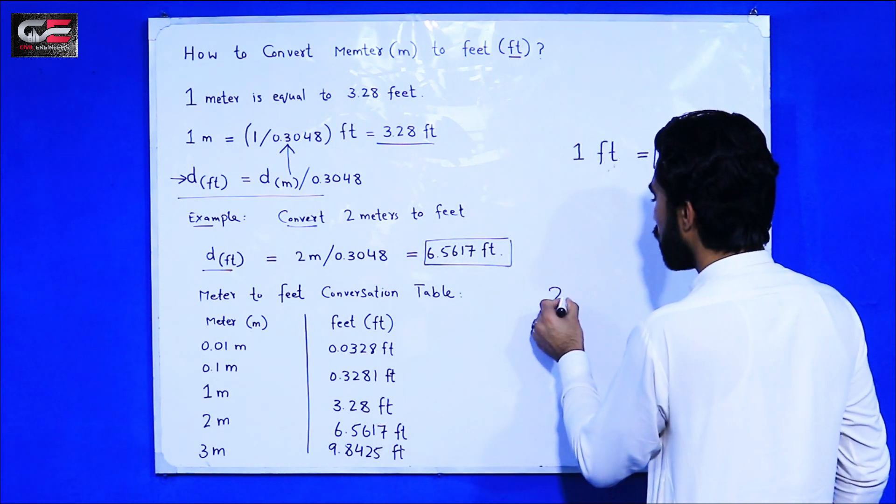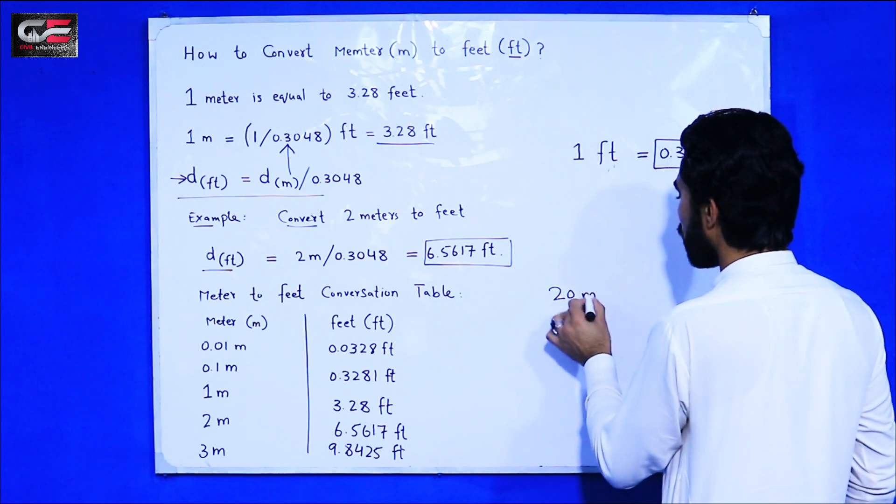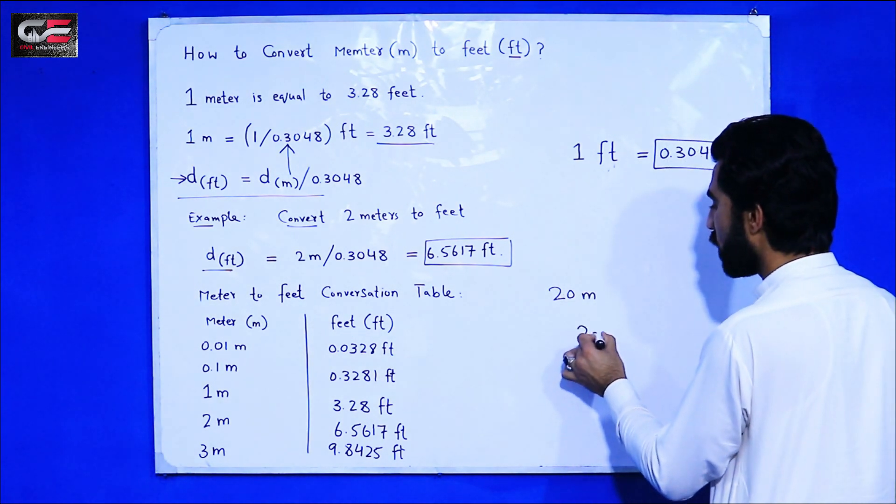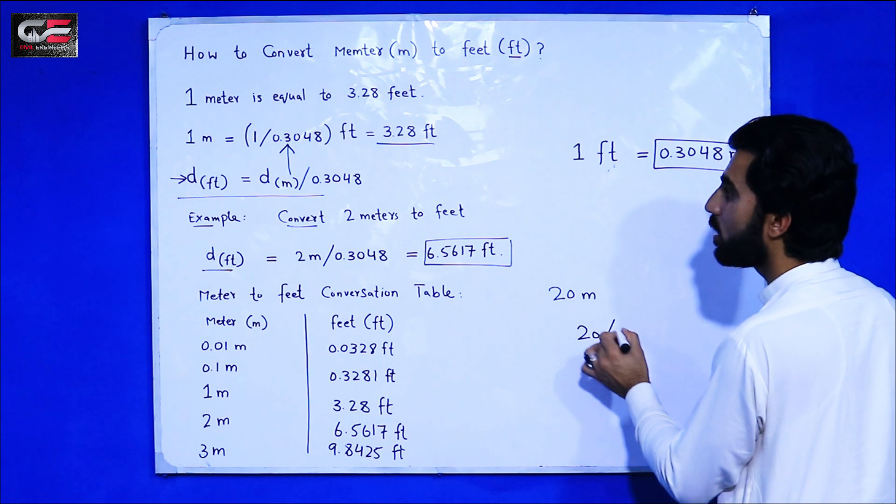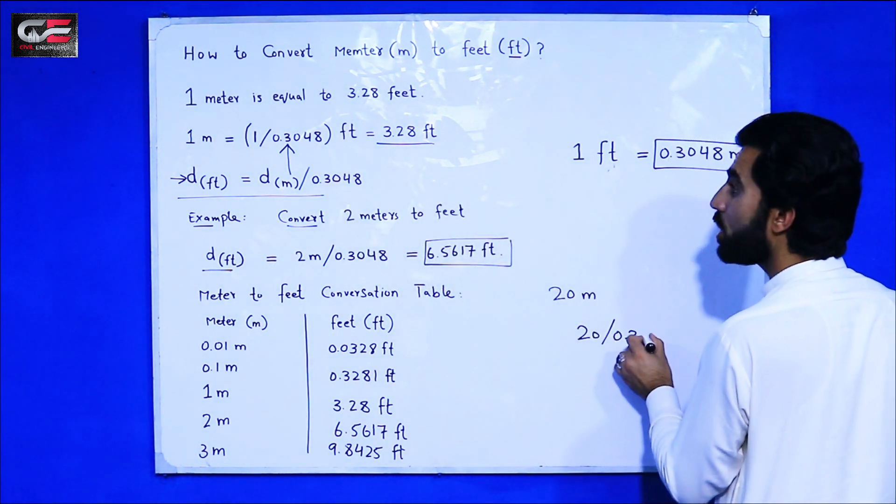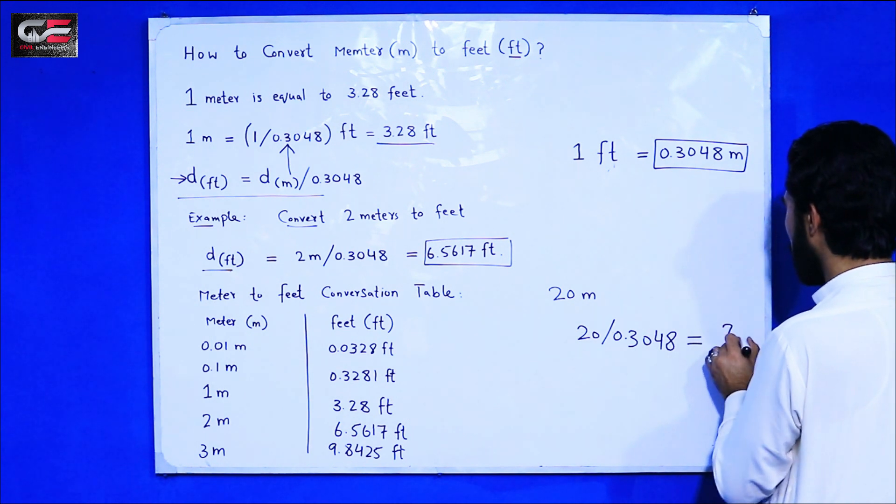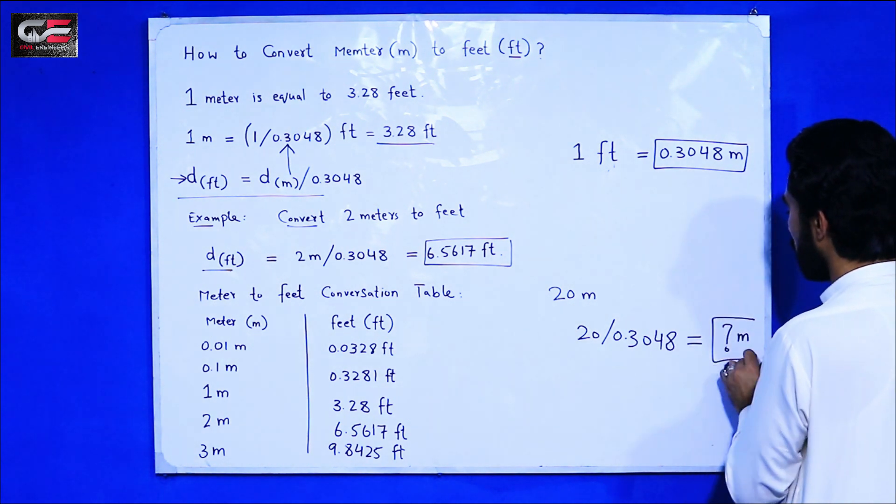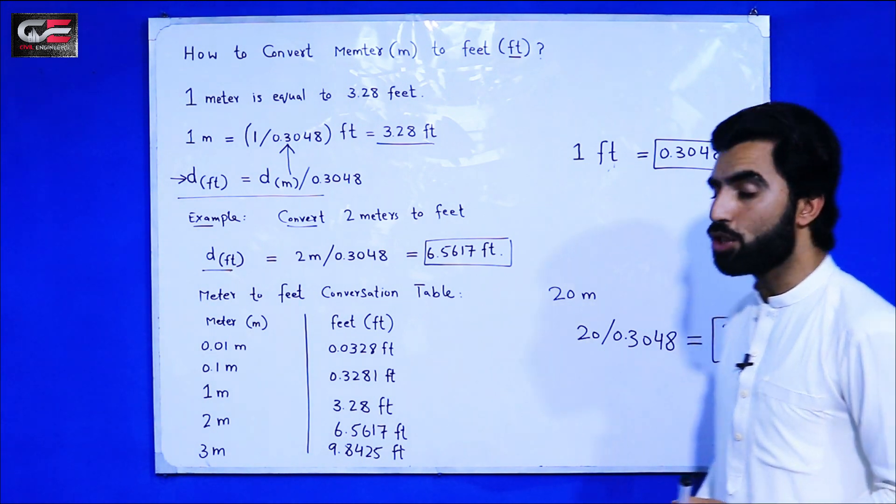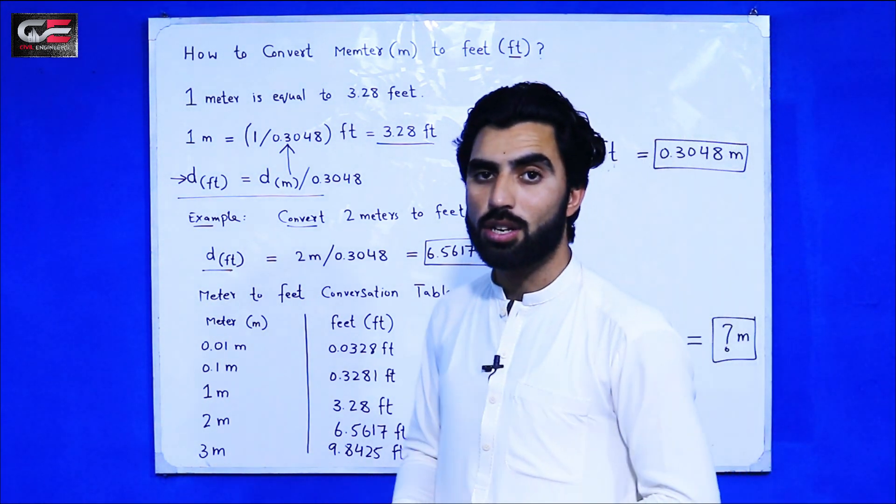So 20 meters should be divided, 20 should be divided by 0.3048. Then we will get distance in feet. This is the formula by which you can convert meter to feet.